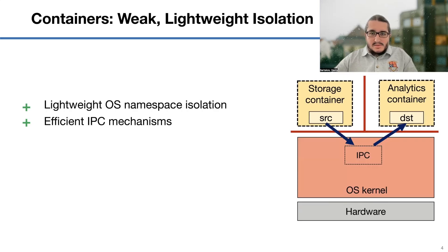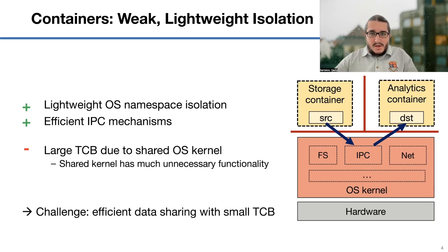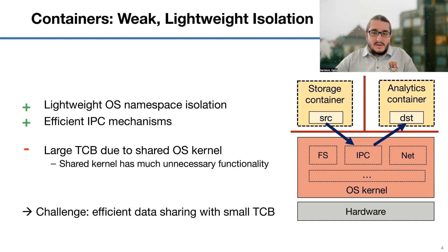In the case of containers, we have lightweight isolation, and we can reuse existing kernel IPC primitives. They are relatively fast and easy to use, but there is another problem: a large trusted computing base. The kernel is the lowest common denominator over all containers and the host system. This means that your REST API application has a USB driver in the TCB because an admin needs to log onto the server, or some deprecated drivers, or a buggy file system that you don't even use. In both cases, it's challenging to provide efficient data sharing with a small trusted computing base.